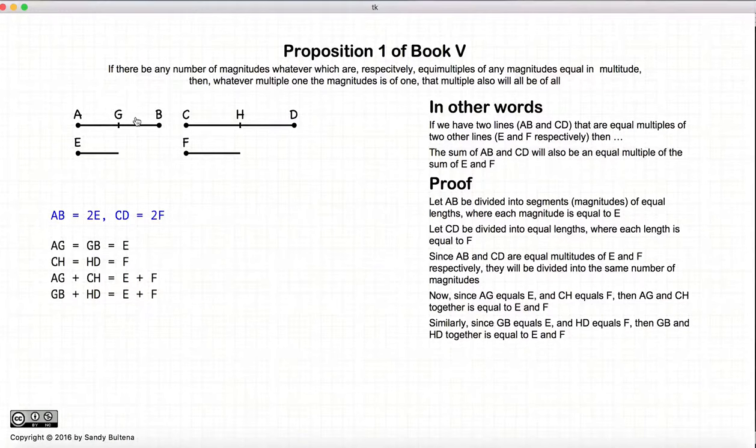Now, this is an example where we're using two as the multiple. But imagine it is three or four or five. Because they're equal multiples, for every segment here, there will be a corresponding segment on the other line.